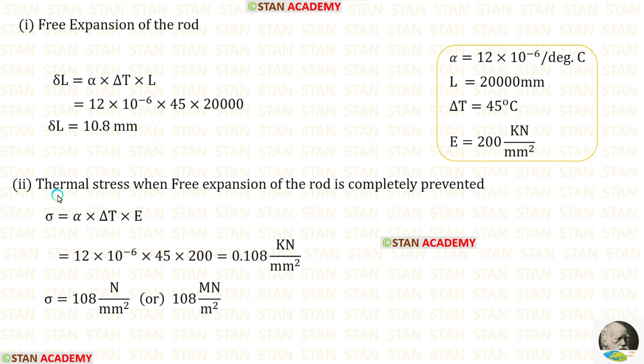Now, let us find the thermal stress when free expansion of the rod is completely prevented. The formula to find the thermal stress is alpha into delta T into E.